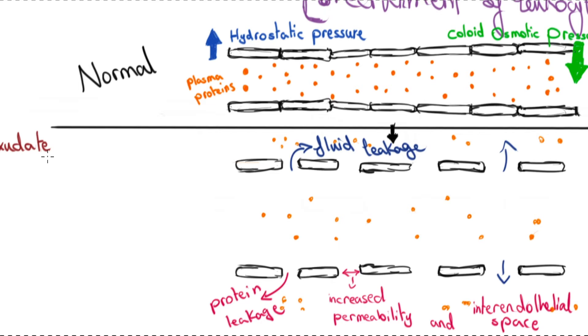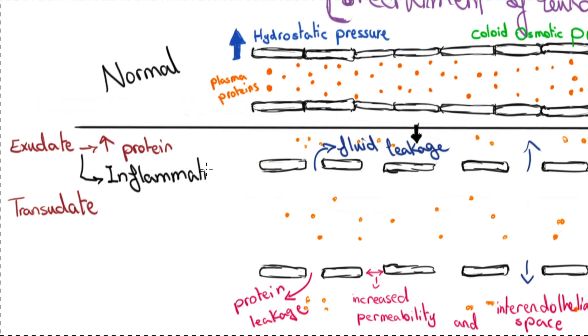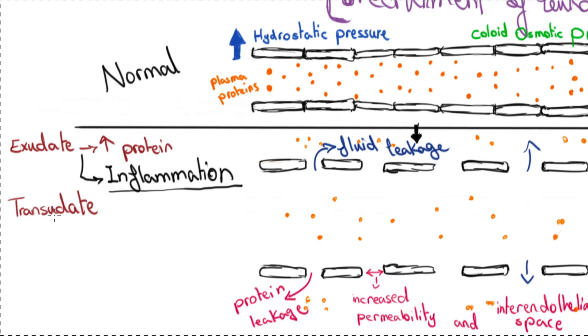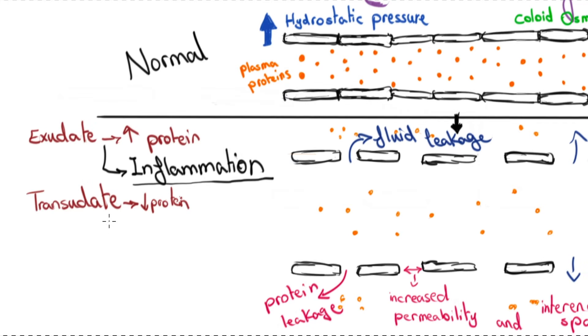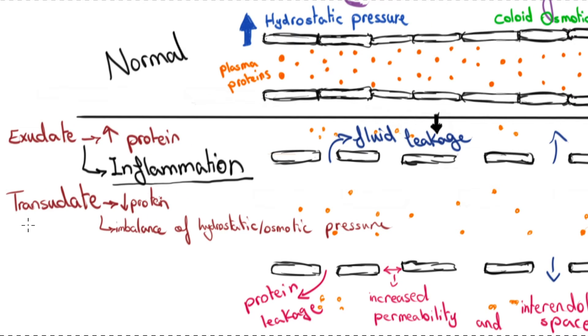So here, please note the difference between exudate and transudate. Exudate is high in protein content and exits the vessels in case of inflammation. Transudate, on the other hand, is a fluid with low protein content and little or no cellular debris at all. It exits the vessel as a result of an imbalance of hydrostatic or osmotic pressure.